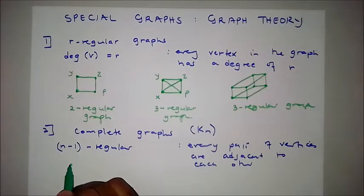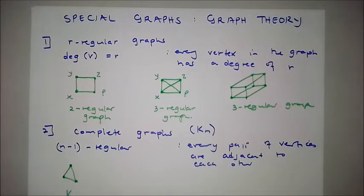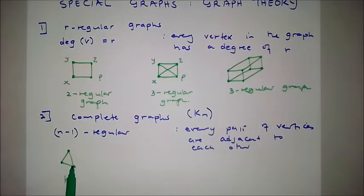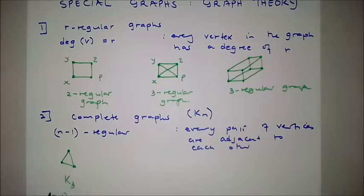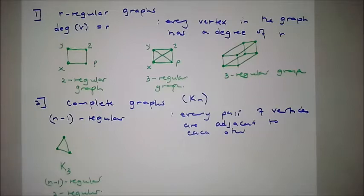Let's appreciate what complete graphs look like. In a graph where every pair of vertices is adjacent, this is a complete graph on three vertices — a K3 graph. Even though the vertices have a degree of two, K3 means three vertices. It's also n-minus-1 regular, so n equals three, n-minus-1 equals two — it's a two-regular graph.